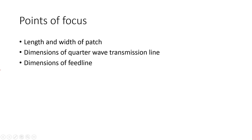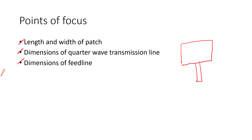There are three points to be focused on. The first is the length and width of the patch. The second is the dimensions of the quarter-wave transmission line. The third is the dimensions of the feed line. This is the basic idea of the antenna we designed — we refer to these as length and width of the patch, dimensions of the transmission line, and dimensions of the feed line.